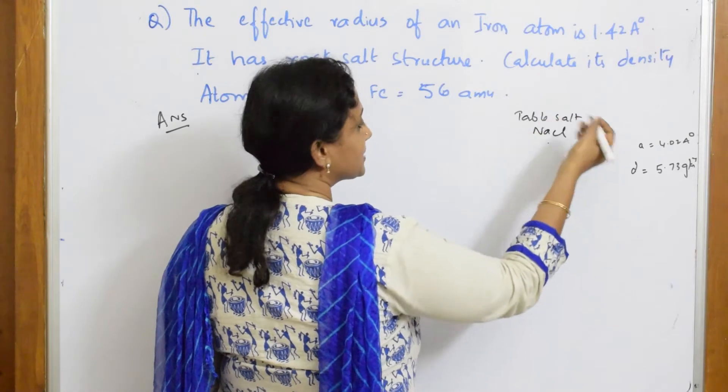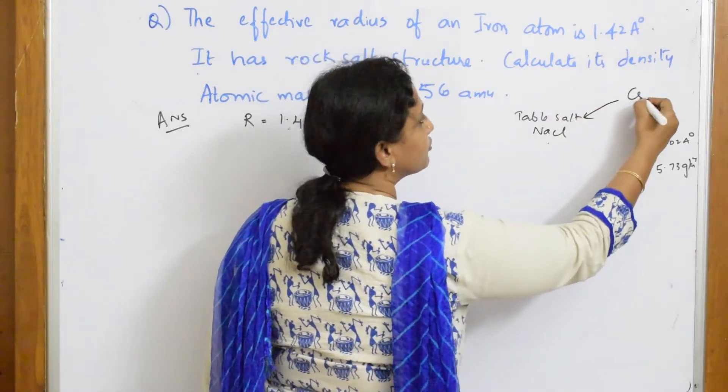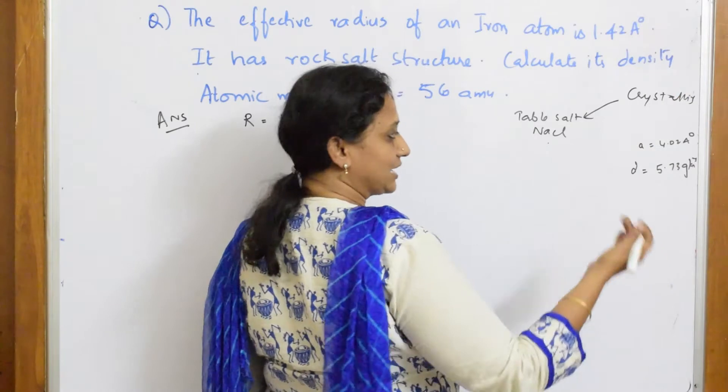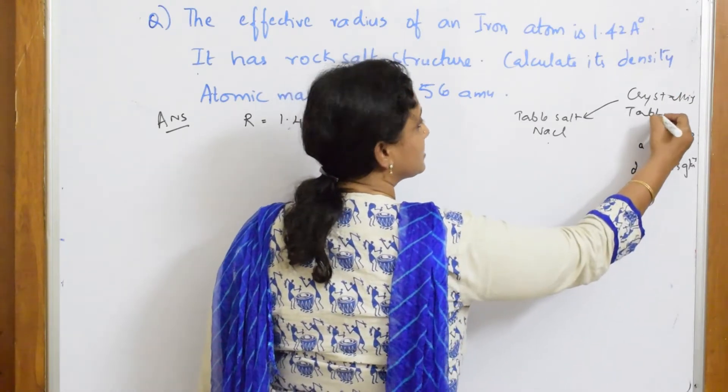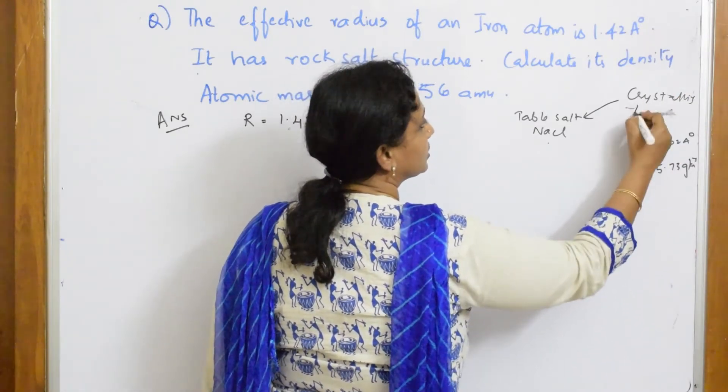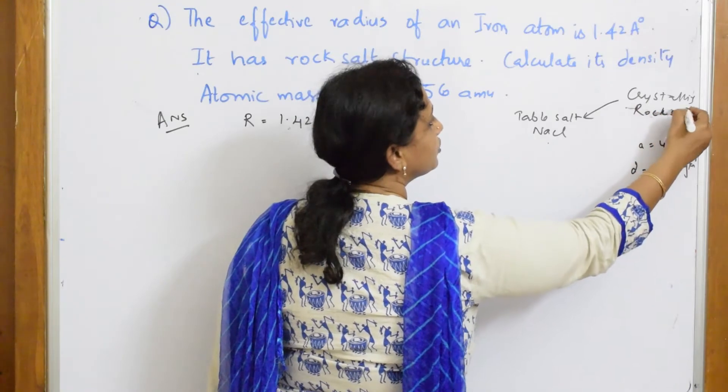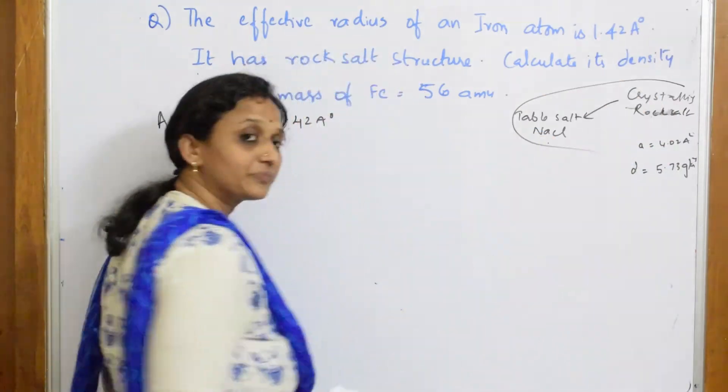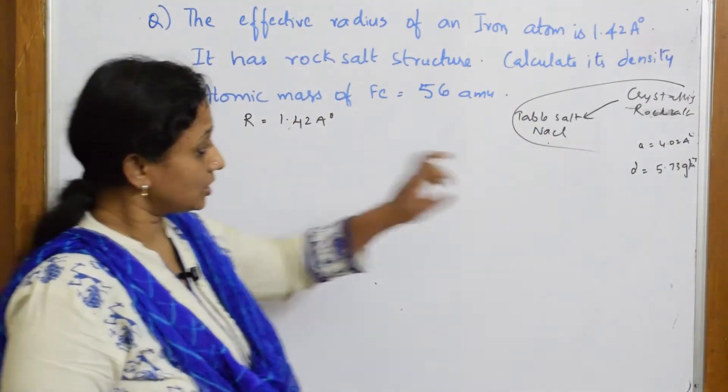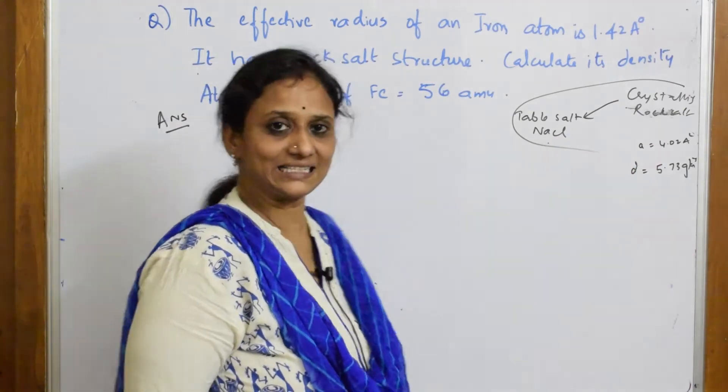If it is this particular table salt in the crystalline form, right? When it is in crystalline form, then we call it as rock salt. Your crystalline form, we call it as rock salt.